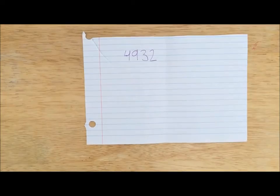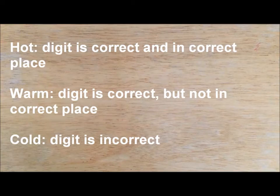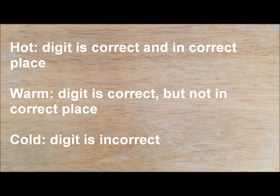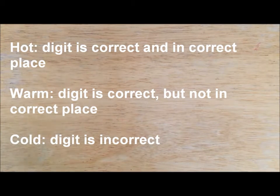The number creator responds by naming the places of the digits that are hot, warm, and cold. Hot means that the digit is correct, so it is in the target number and it is in the correct place. Warm means that the digit is correct but not in the correct place. Cold means that the digit is not correct, so the digit is not in the target number at all.